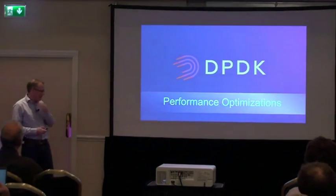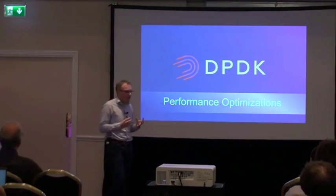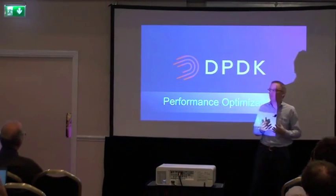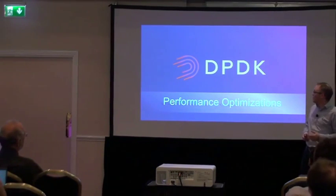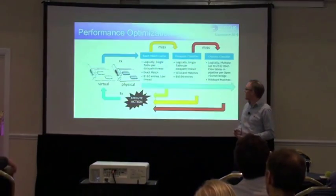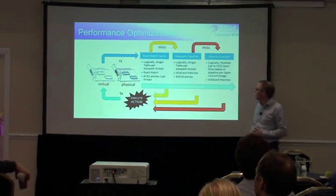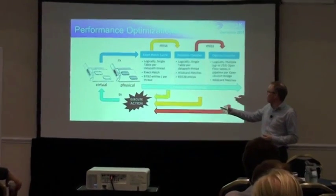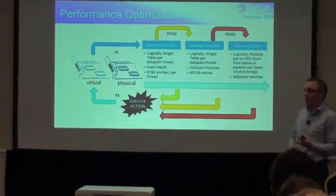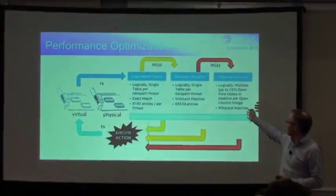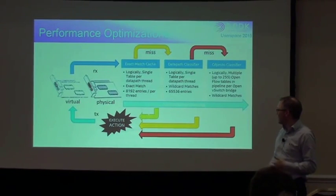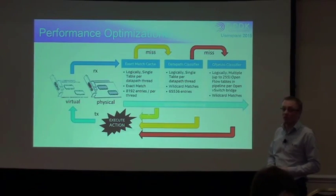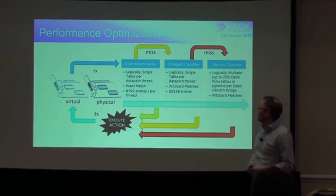For actual code optimizations: in the packet flow we receive packets from virtual or physical NICs, look up in a series of tables depending on which entries are populated, find a match, execute any actions, and transmit on a virtual or physical NIC. Ideally we want to hit in the exact match cache (EMC) for fastest performance. Missing the EMC means a performance penalty by going to the wildcard data path classifier, or the OF proto tables for first packets in a flow.